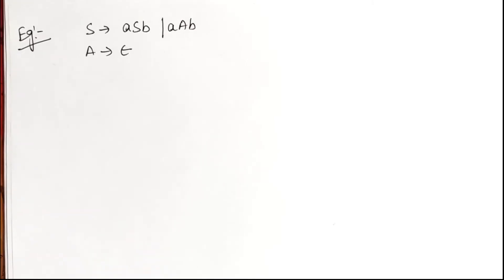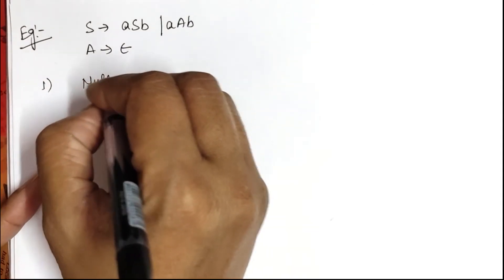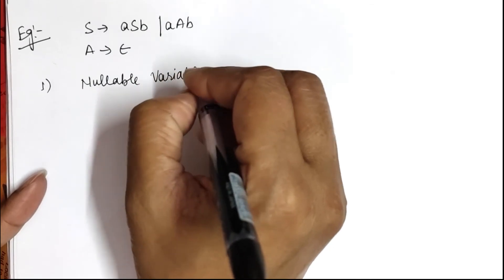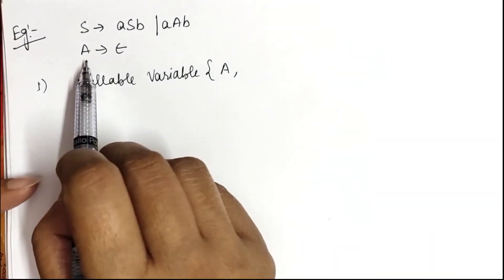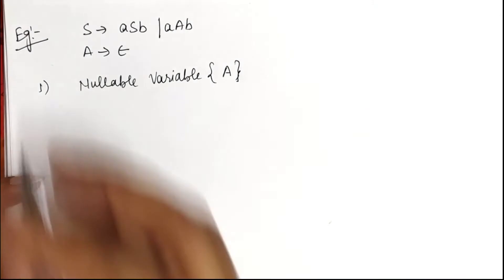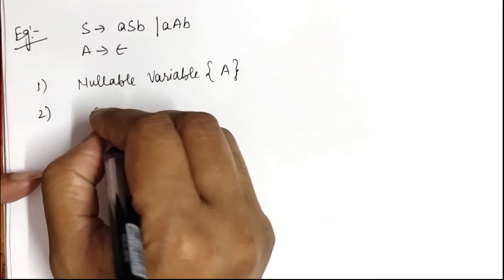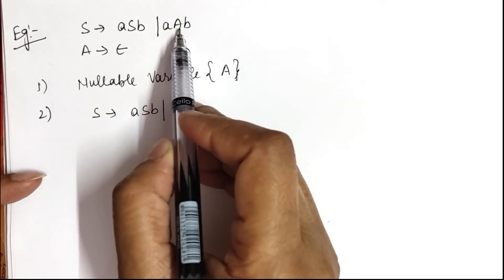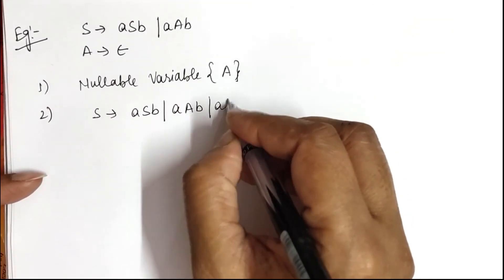The next example: S derives A A S B or A A B, and A derives epsilon. The first step is to find the nullable variables. A derives epsilon, so A is a direct nullable variable. Checking for indirect epsilon productions — no others found. So A is the only nullable variable. We now check the right hand side of every production wherever A is encountered and rewrite with A or without it. For S derives A A S B: we also write A A B when substituting one A as epsilon.